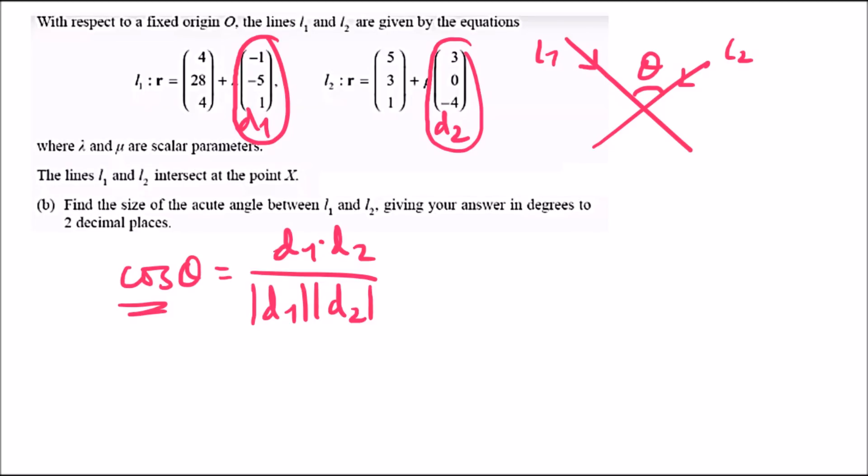For part b, I've highlighted what is necessary to solve this problem. d1 and d2 represent the directional vectors for lines L1 and L2 respectively. We need to find the size of the acute angle between L1 and L2, given in degrees to two decimal places.